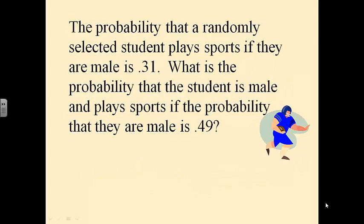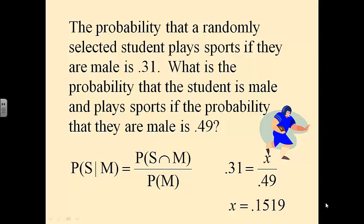The probability that a randomly selected student plays sports if they are male is 0.31. What's the probability that the student is male and plays sports, if the probability of being male is 0.49? We want to figure out what formula to use. The probability that they play sports given they are male is 0.31 — that's what we know. We're looking for the probability that they are male and play sports — that's our unknown X. The probability of being male is 0.49. Set up your equation, put in the numbers, solve it, and you're done.